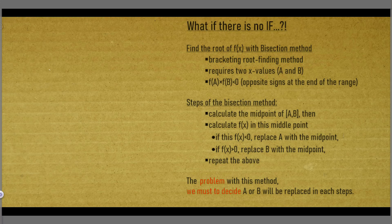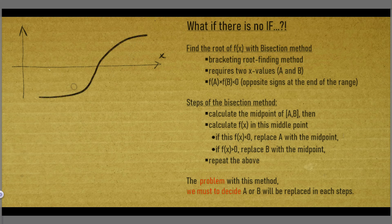Find the root of function f with the bisection method. The bisection method is a bracketing root-finding method, so it requires two x values, a and b. For these values, f(a) times f(b) must be less than 0, meaning opposite signs at the ends of the range.